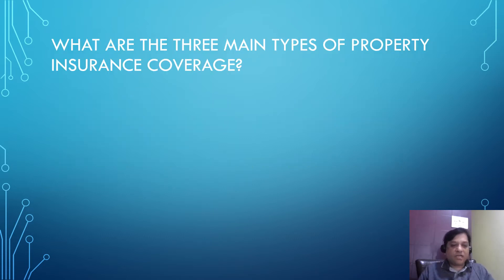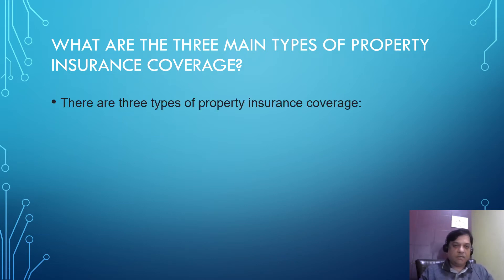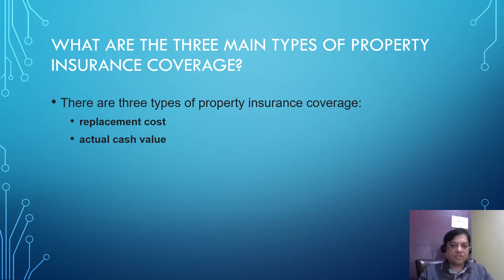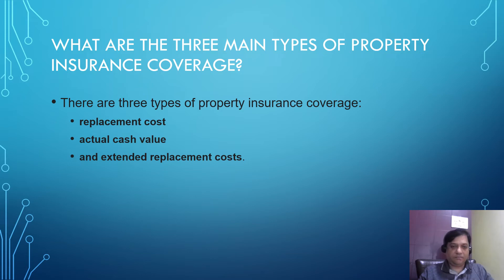What are the three main types of property insurance coverage? They are replacement cost, actual cash value, and extended replacement cost. These are the three types of property insurance coverage.